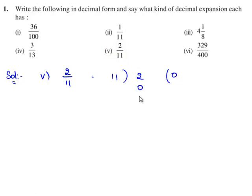11 times 0 is 0, so the remainder is 2. 11 does not go into 2 again, so we take a decimal point. 2 becomes 20. 11 goes into 20 one time, as 11 times 1 is 11. We are left